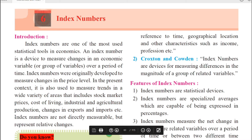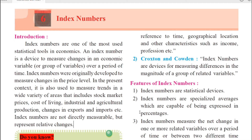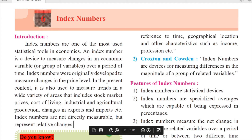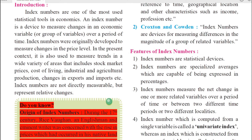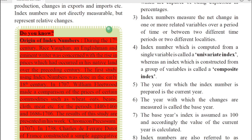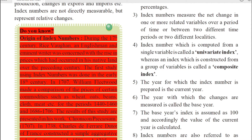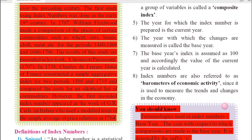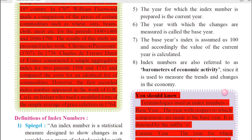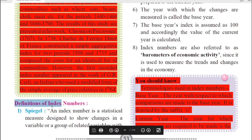Index numbers are not directly measurable, but they represent relative changes. Even though we cannot directly measure the change, they represent relative changes in economic variables — whether prices, export-import changes, or population trends. Index numbers help in representing these relative changes. Note that in this PDF, portions marked in red have been reduced due to the COVID-19 situation; the red-marked activity boxes are not included for your board exam this year. We will now begin with the definitions of index numbers.